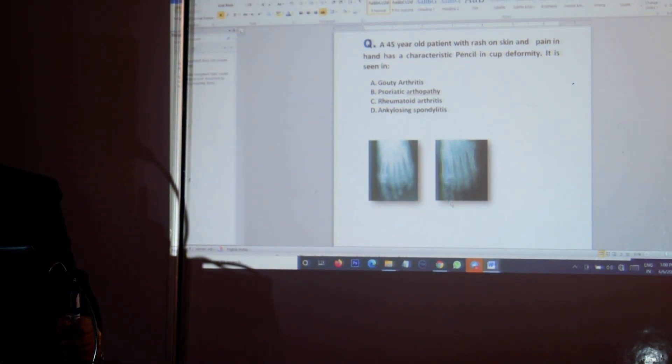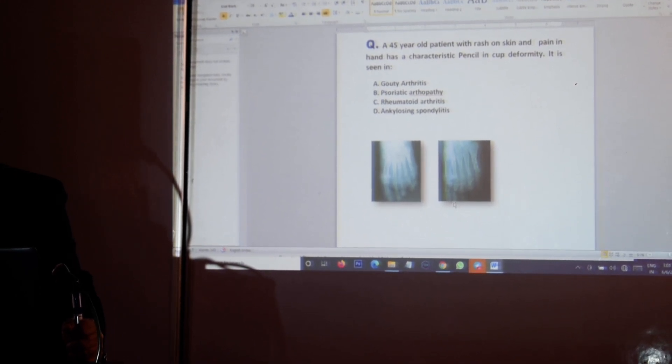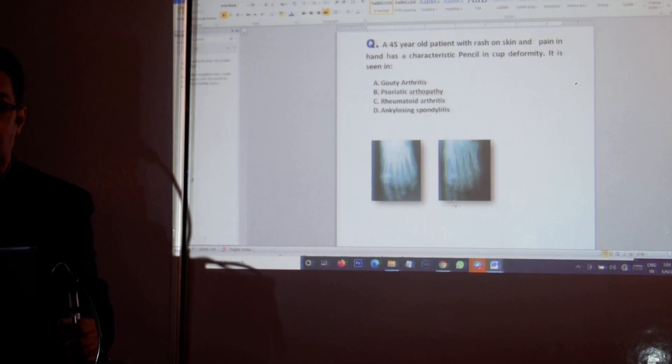Pencil in cup deformity is the destruction of the distal ends of the phalanges as is shown in the figure. The destruction of the distal ends of the phalanges, the digits or the toes, is characteristically given the name pencil in cup deformity. As far as the arthritis of psoriasis is concerned, which we call psoriatic arthritis, it is asymmetric oligoarthritis and the sausage digits are very important associations. There can be sacroiliitis as well. The question itself mentions rash on the skin and most likely it is a psoriatic rash and the pencil in cup deformity is typical of psoriasis.